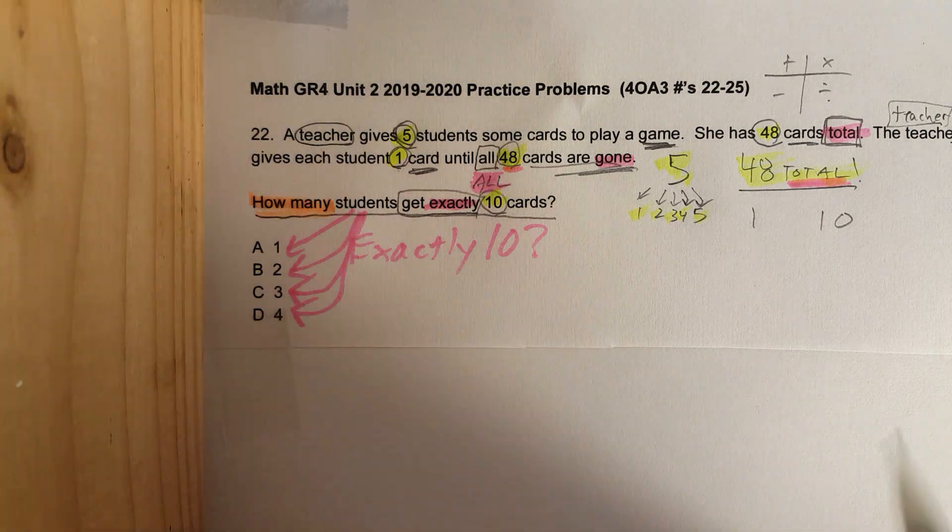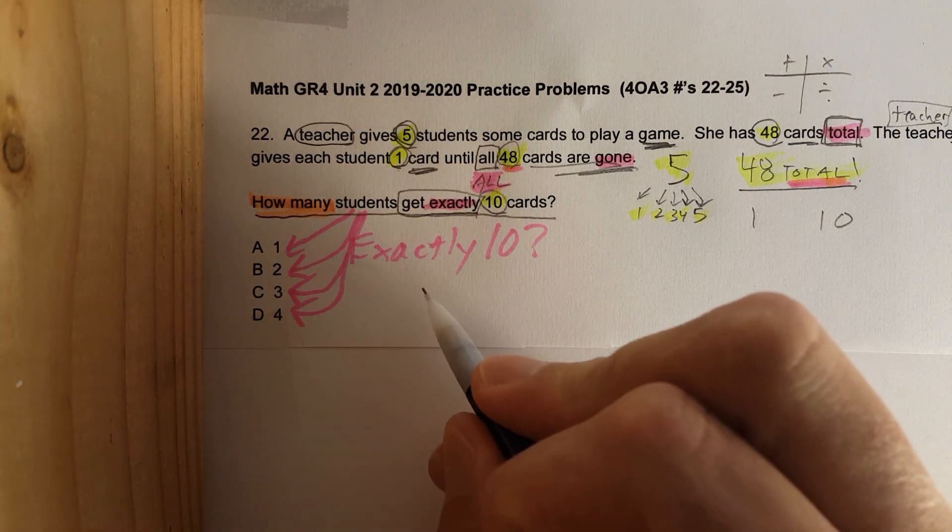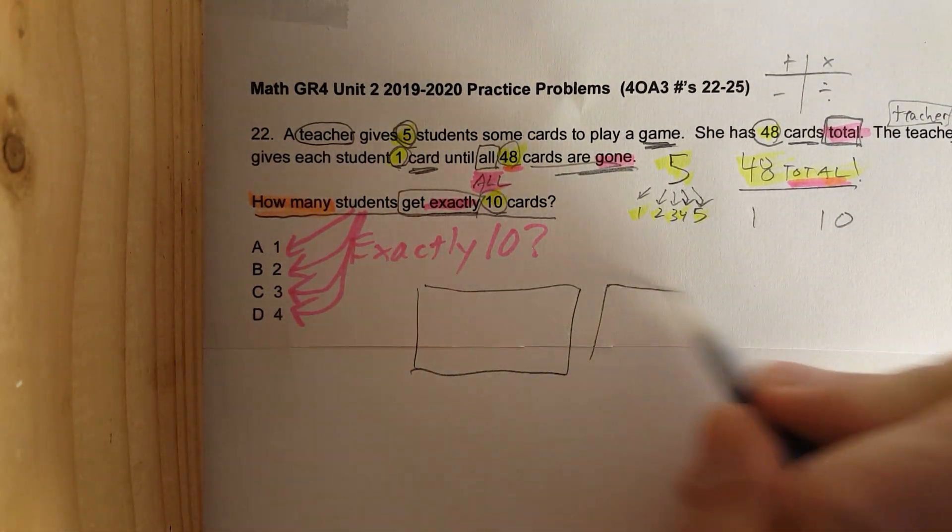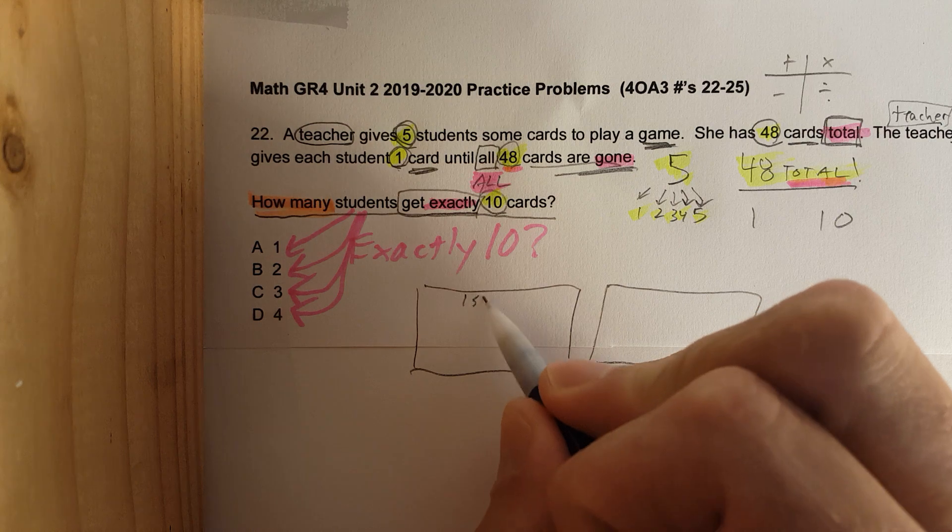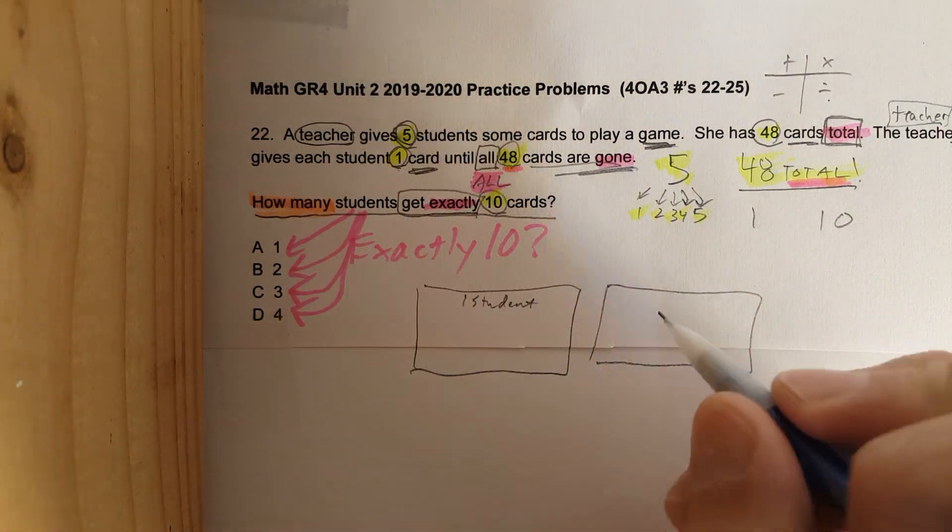Let's draw this out. You can solve word problems a number of different ways, but let's say you are struggling and these numbers are small: 5, 48. We can draw this out and I'm going to do that for you visually. Here's one student. Of course students are not boxes but we're going to treat them like a box today.